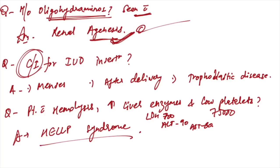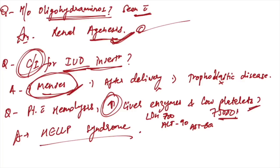Contraindication for IUD insertion: contraindications for IUD is heavy bleeding or menses, not after delivery, not trophoblastic diseases. Patient with hemolysis with increased liver enzymes and low platelets like 70,000-75,000, liver enzymes with LDH raised to 700, ALT and AST raised - this scenario is making HELLP syndrome.